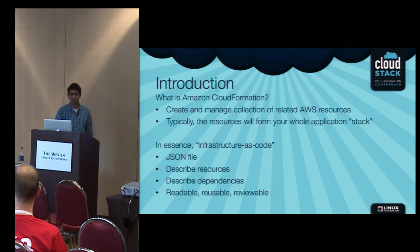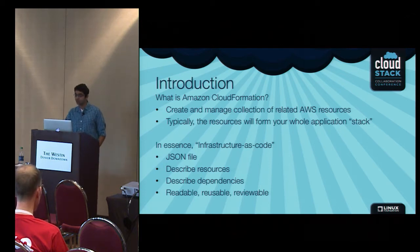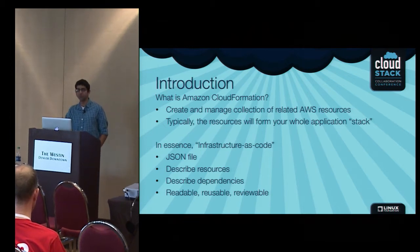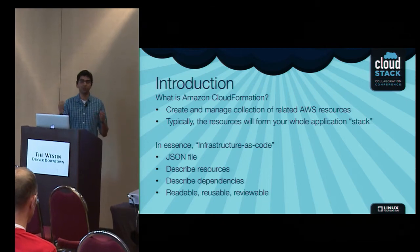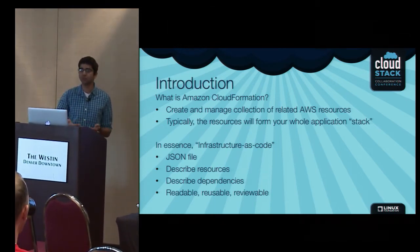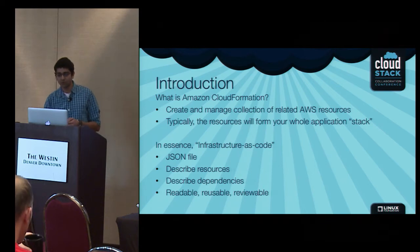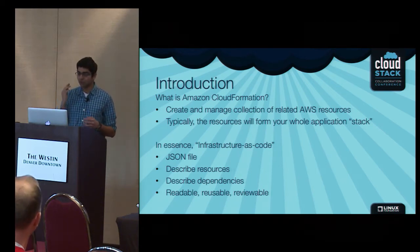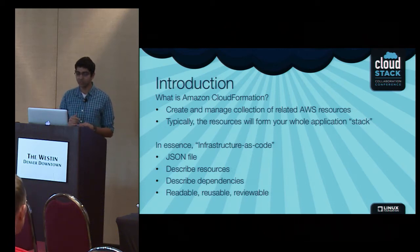You define your whole application or infrastructure in some kind of a readable file. It's a JSON file in the Amazon world, and we have kind of built on top of it as well. In the JSON file, you simply describe your resources. You would typically start from a VPC as your base resource and build on top of it, and you also define the dependencies in the JSON file.